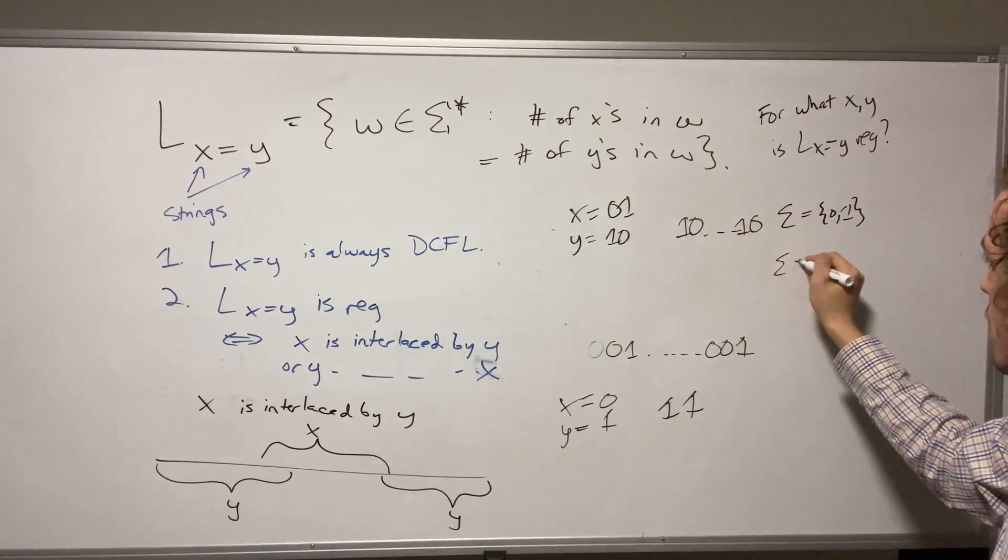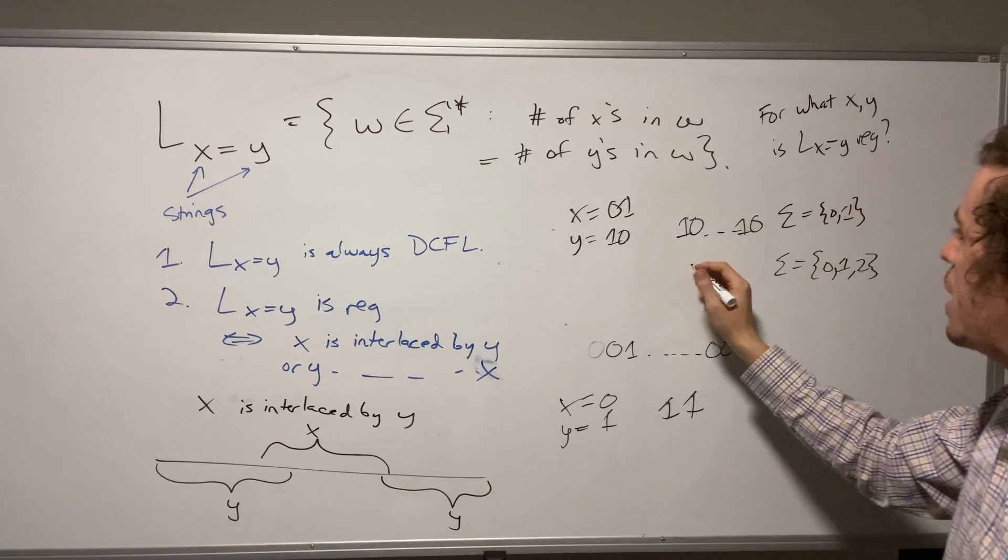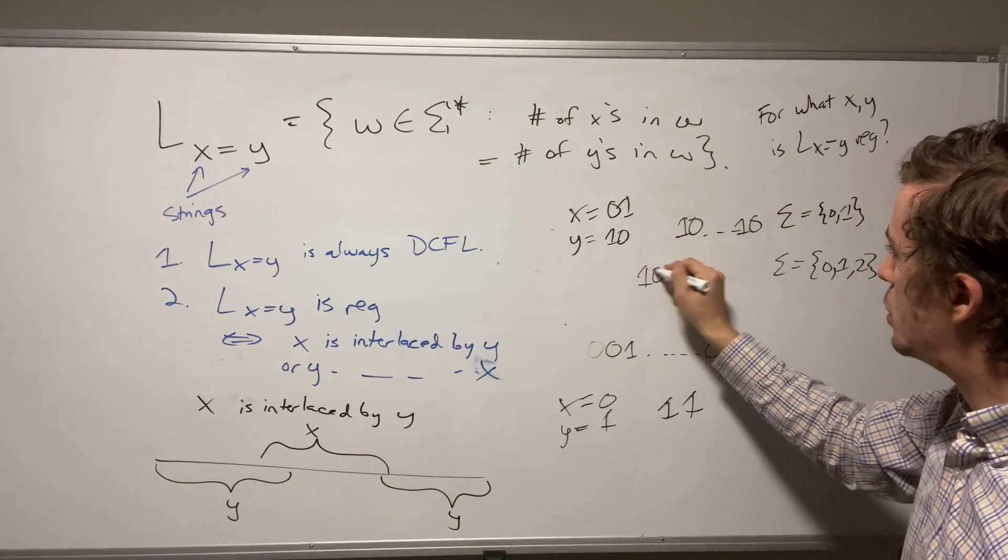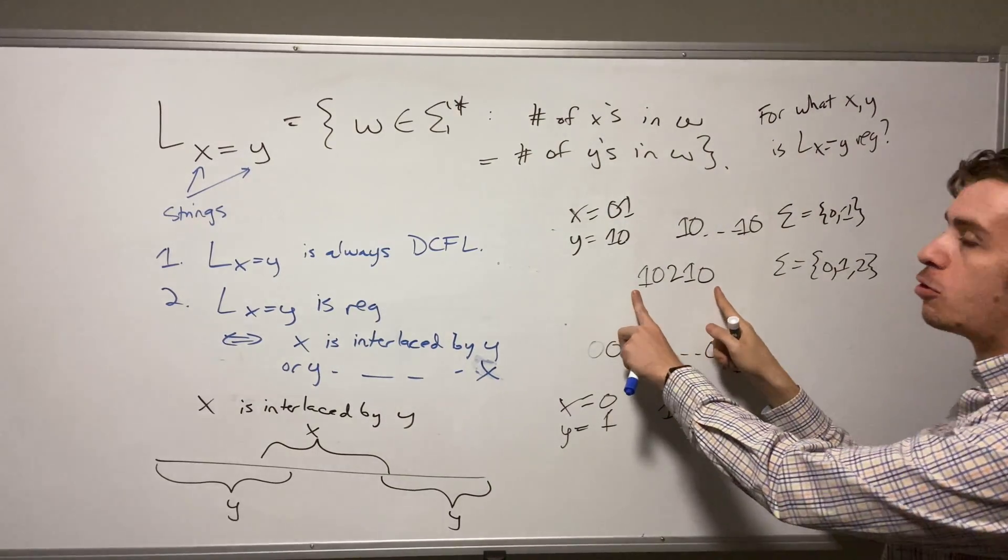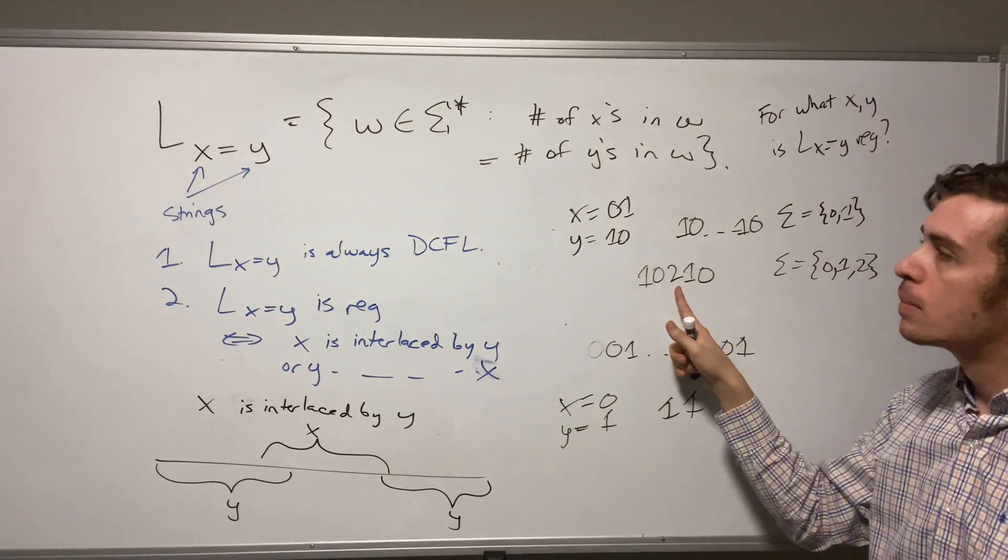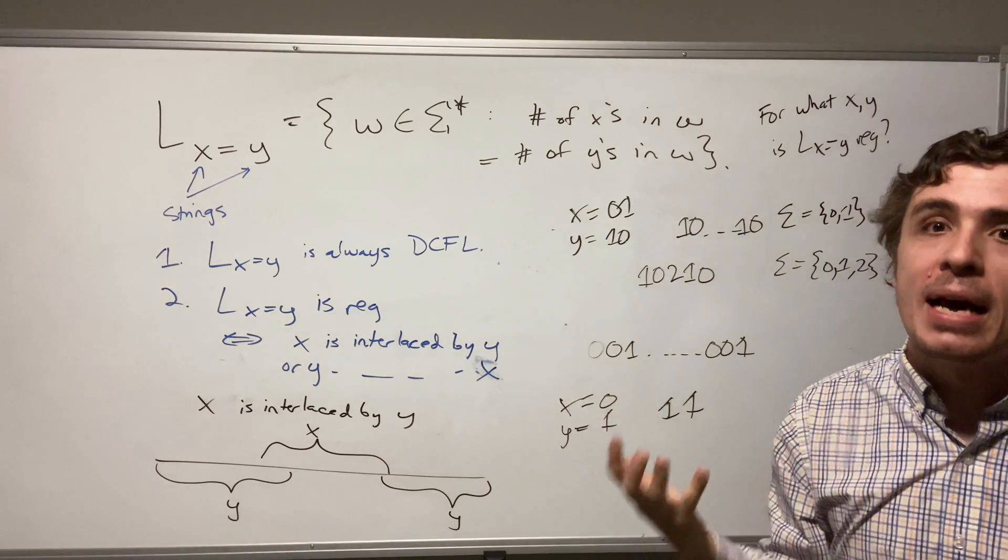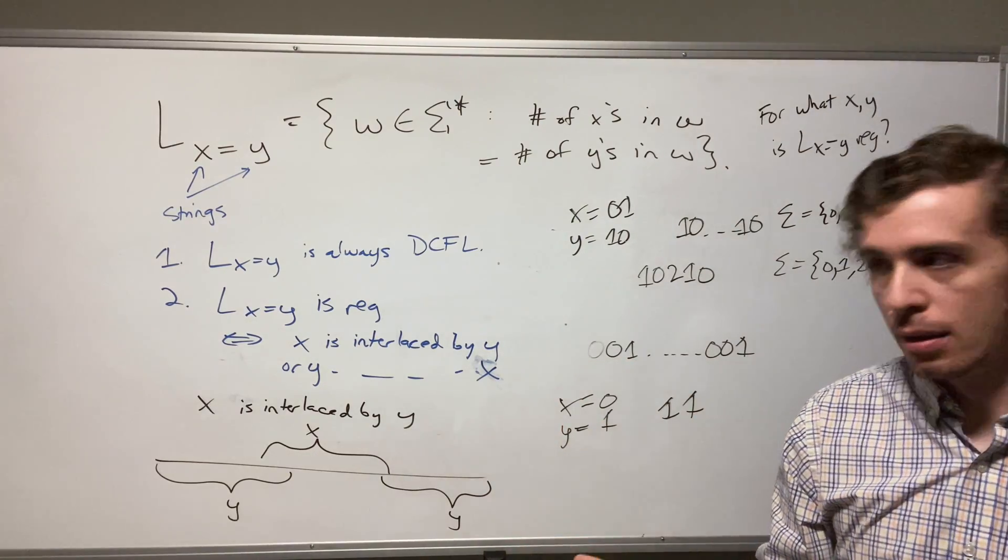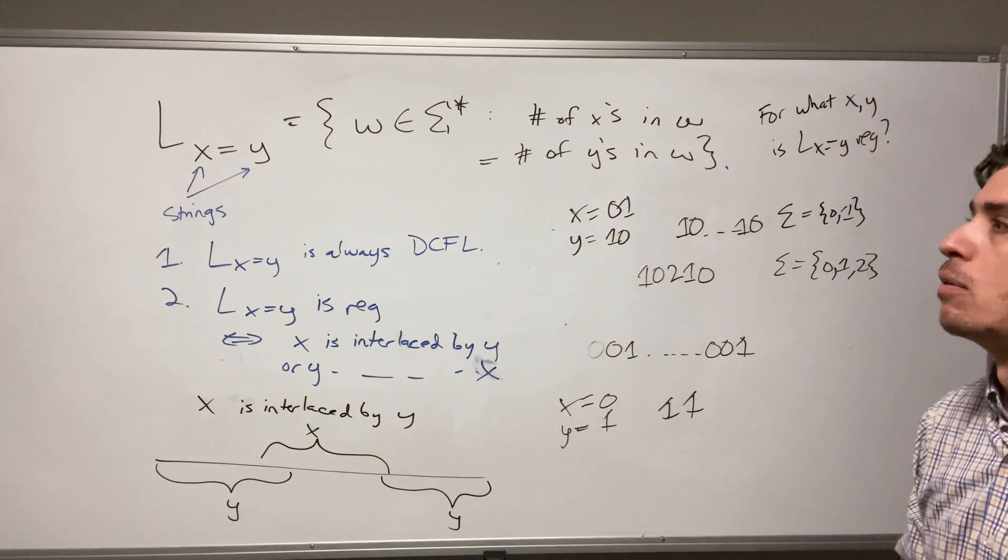If we have the alphabet being zero one and two, then what we can do is say one zero two one zero, then this string does not have X in it, because this two is intersecting in between. And so therefore, in this case, that's the reason why that language was not regular. You can prove it via the pumping lemma, but this gives a different proof that it is not regular.